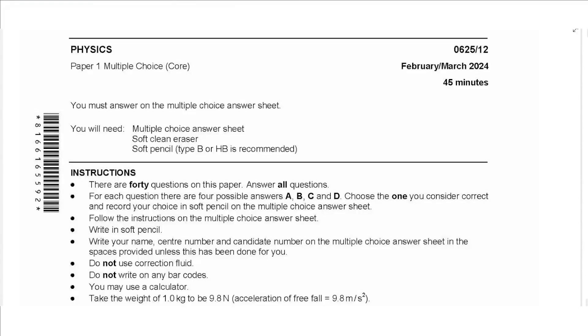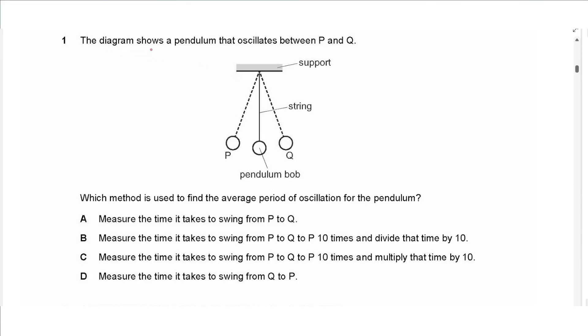Hello everyone, this is John Hashmat and welcome to Physics Simply. In this video I will be solving the paper 1 exam for core physics for February March 2024. So let's get started. Question one says the diagrams show a pendulum that oscillates between P and Q. Which method is used to find the average period of oscillation for the pendulum?